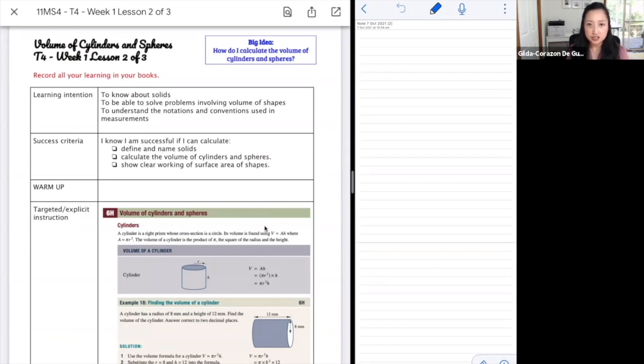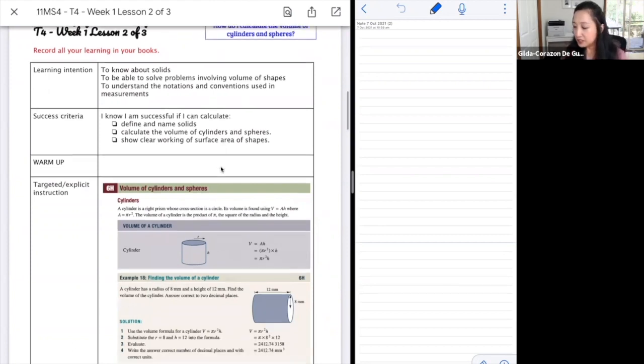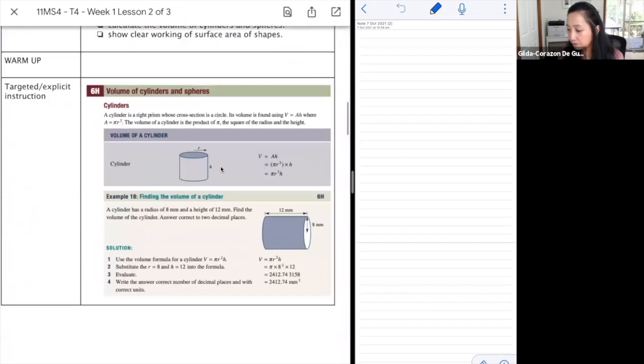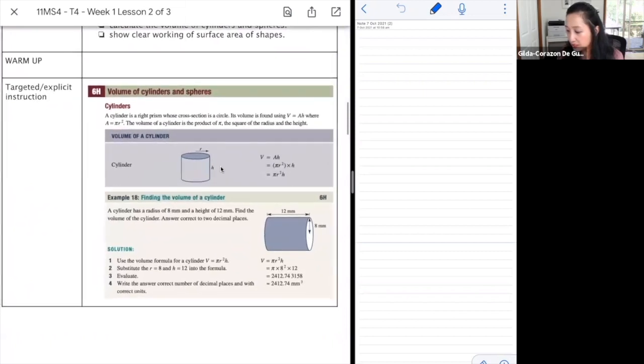So those are just the ones that would probably be tricky when we talk about volume of cylinders and spheres, or any volume formula. It's really figuring out from the figure that you're given which one you would need to replace to fit into your formula and for you to figure out the correct answer. So let's have a look at an example here.